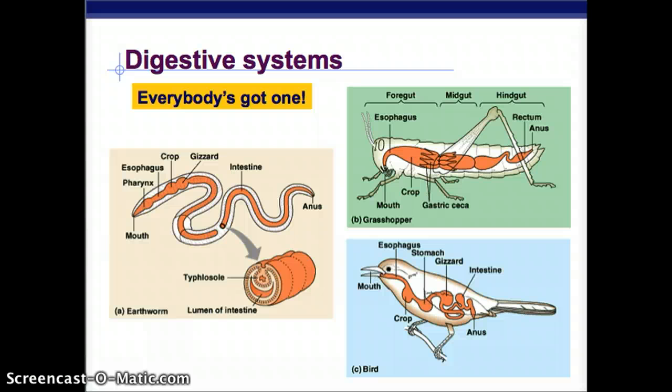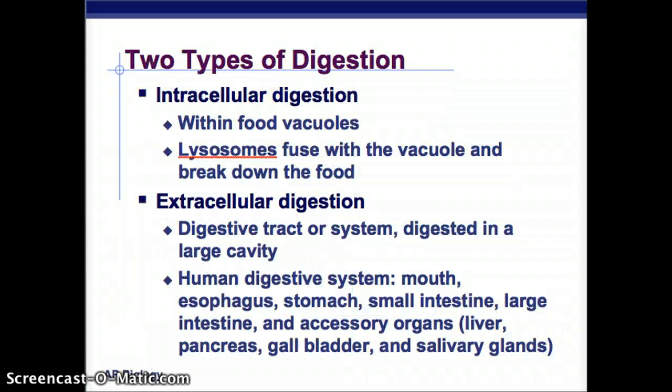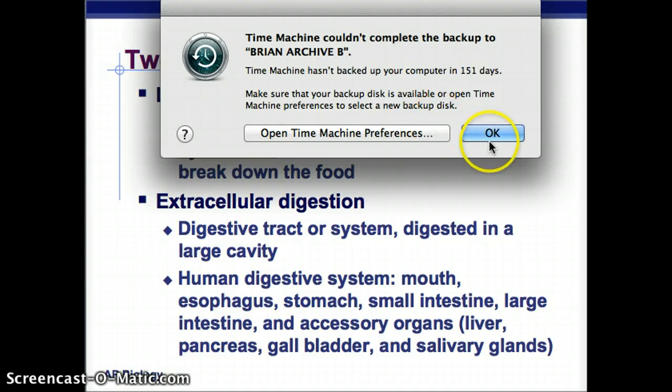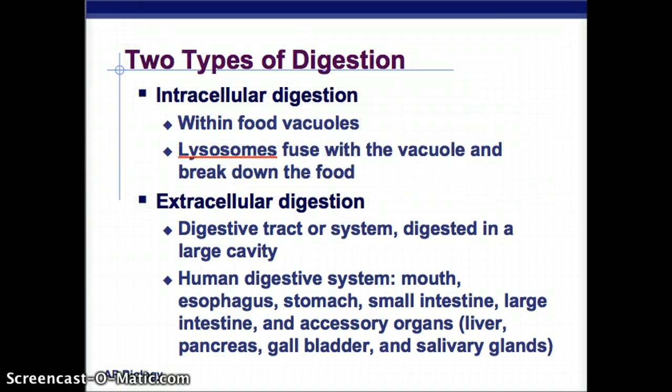You'll see some very similar characteristics to our digestive system. There are two types of digestion. One is intracellular digestion — 'intra' means within. Within food vacuoles, lysosomes fuse with the vacuole and break down the food, so it's within a cell. Then there's extracellular digestion, where there's a large cavity, like our stomach, and food is digested in that large cavity.